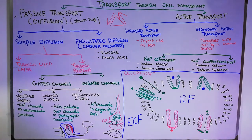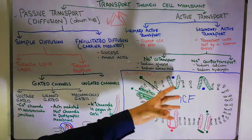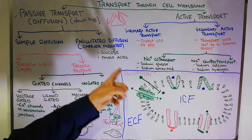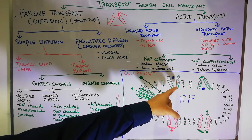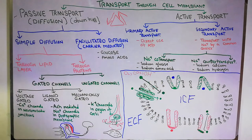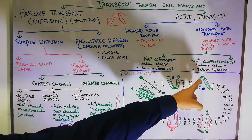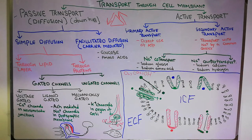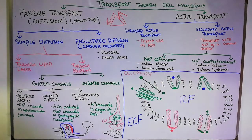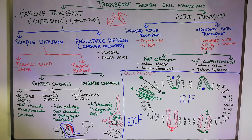Now for facilitated diffusion: it also does not require energy and is used for glucose and amino acids, which are large molecules that cannot come in directly. Some help is required, so they attach to a carrier protein. The carrier facilitates the movement of glucose or amino acids into the cell — it opens on the outside, the molecule attaches, then the carrier closes on the outside. Only a fixed quantity can enter at a time, and the rate at which glucose or amino acids move in or out cannot exceed a set limit.